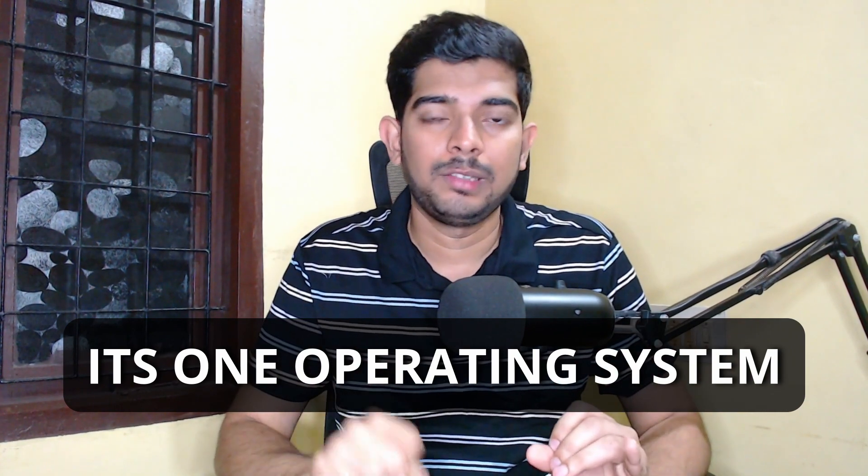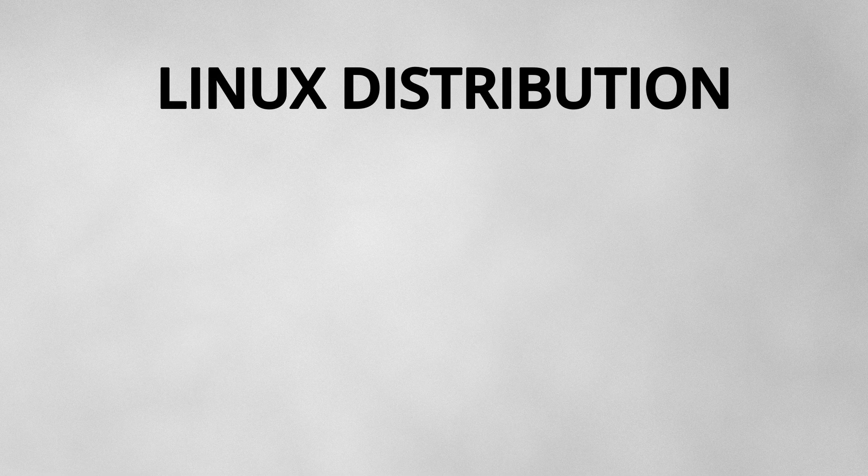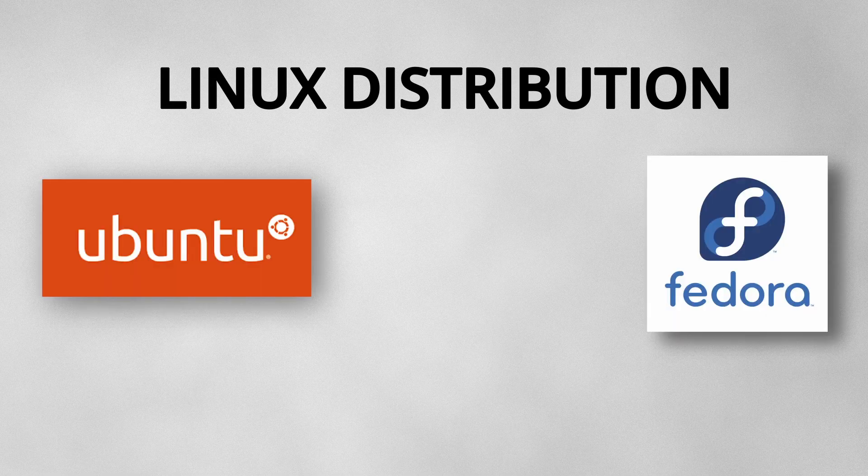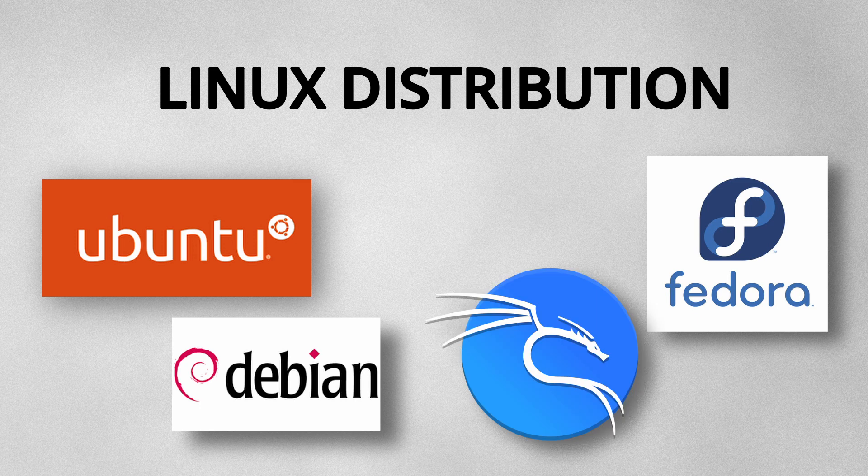It's almost a complete operating system, though there are some other tools required. When we say just Linux, we can't download it and use it directly. But GNU slash Linux we can pretty much use on our computer — we can write commands and control things. Whereas Linux distributions like Ubuntu, Fedora, Debian, and Kali Linux are things that can be downloaded and used.